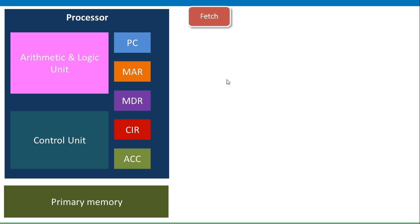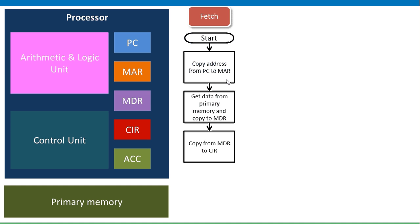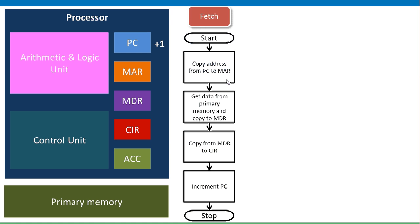The first part of the process is fetch. You copy the address from the program counter to the memory address register. The program counter is pointing at something in primary memory. That address is copied to the memory address register, which can then get that data from primary memory and copy it to the memory data register — at this point it's a binary string. The memory data register copies that to the current instruction register, and then the program counter is incremented to point at the next instruction that needs to be carried out. That's where the fetch process ends, because the current instruction register now contains the current instruction.